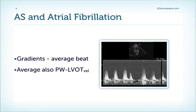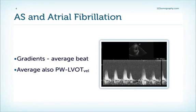If we have aortic stenosis and atrial fibrillation, it's very important to take either an average beat or to take 10 to 15 beats and calculate an average of these beats of the AV velocities. We also have to remember to take an average beat of the LVOT velocity, or again take 10 to 15 beats and calculate the mean in the velocity.